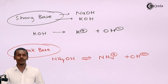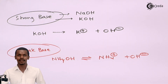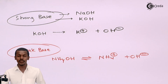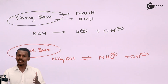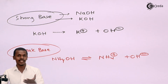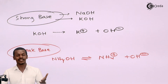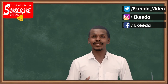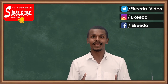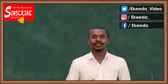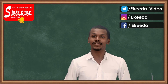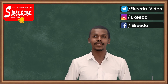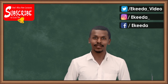So these are the two classifications. Because of the degree of dissociation, an acid and a base can be classified into strong acid, weak acid, strong base, and weak base. That's what I wanted to teach in this lecture — thank you friends for watching, I hope you liked this video, please share it with your friends and don't forget to subscribe.